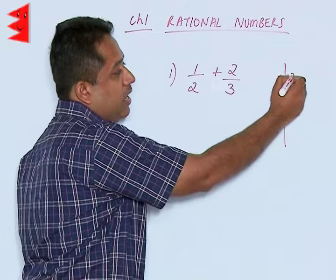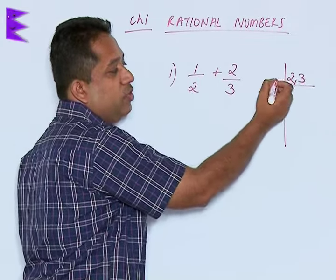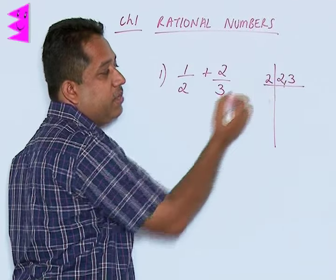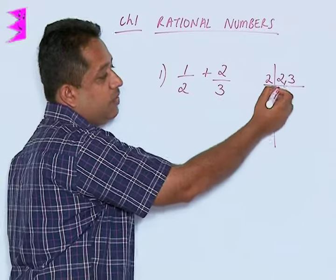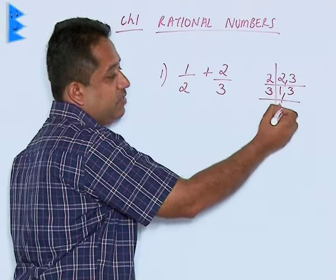So here I am going to show you how to take the LCM of 2 and 3. We are going to find these factors, we take the lowest prime number that is 2, 2 goes once and 3 remains as it is, then again 3, this is 1 and 1.